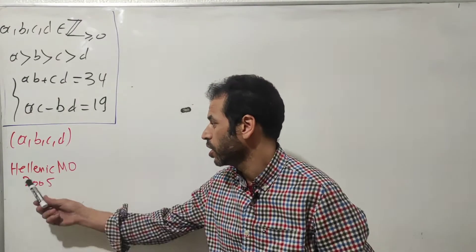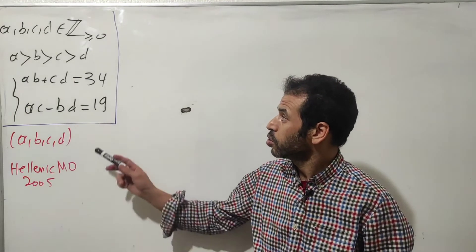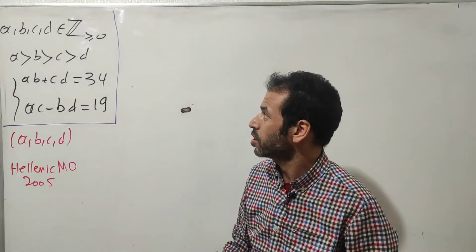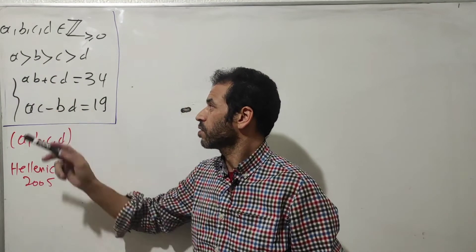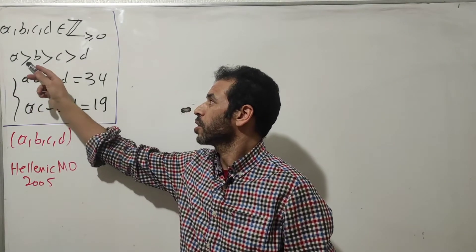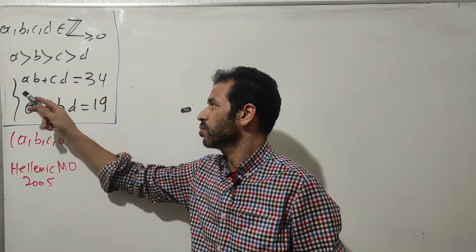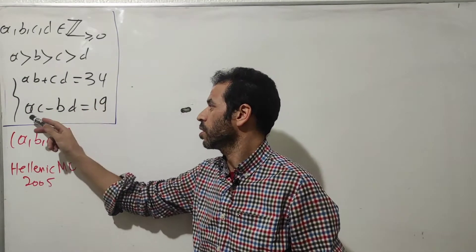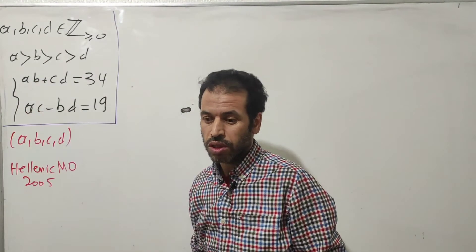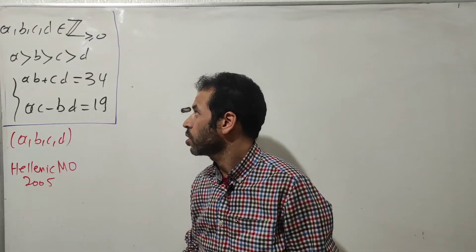Here is a nice problem from the Hellenic Mathematical Olympiad, edition 2005. Our goal is to determine all non-negative integers a, b, c, d satisfying the following two conditions: the ordering a > b > c > d, and the equation system: ab + cd = 34 and ac - bd = 19. We have just two equations involving four unknown variables, and we are going to solve this in integers.